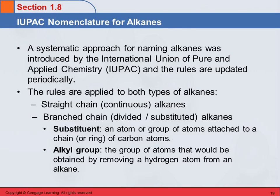Now we get into nomenclature. Nomenclature is just a systematic method of naming things. The International Union of Pure and Applied Chemistry is the organization that came up with the system of rules for naming things. This was an international organization, so everybody agreed on how to name compounds. These rules occasionally need to be updated as new things are discovered.